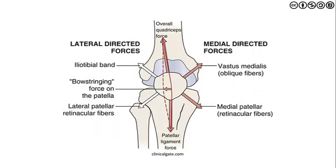Here we see the forces, both lateral and medial. We can begin to appreciate what's known as the bowstring force on the patella, which gives a graphical illustration of why we see more of a correlation with lateral tracking of the patella.